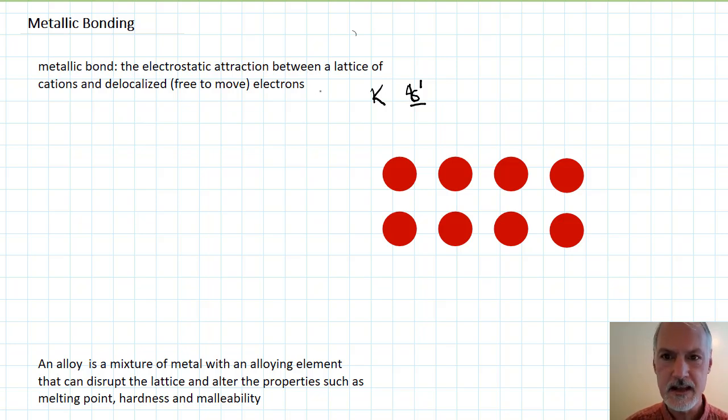We define a metallic bond that exists in metals as the attraction between a cation, which is a positively charged particle—I remember that because the T in cation looks like a positive sign—and free-moving electrons, which provide our negative charge. Hence, we can describe it as an electrostatic attraction.